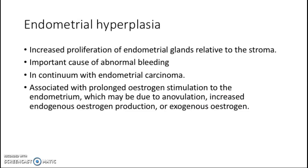Next, endometrial hyperplasia is defined as increased proliferation of endometrial glands relative to the stroma. It is a very important cause of abnormal bleeding and has a continuum with endometrial carcinoma, so it is particularly important to diagnose. It is associated with prolonged estrogen stimulation to the endometrium, which may be due to anovulation, increased endogenous estrogen production, or exogenous estrogen.